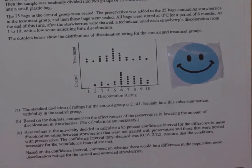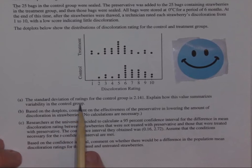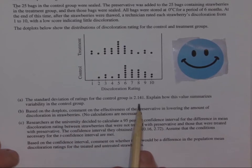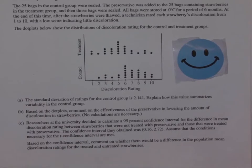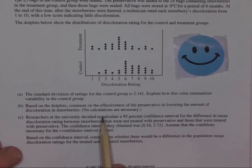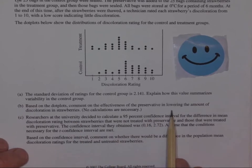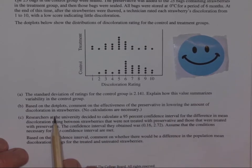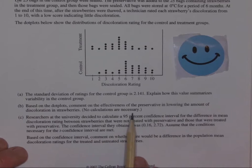And so part A says, the standard deviation of the ratings for the control group is 2.141. Explain how this value summarizes the variability in the control group. Part B, based on the dot plots, comment on the effectiveness of the preservative in lowering the amount of discoloration in strawberries. No calculations are necessary.